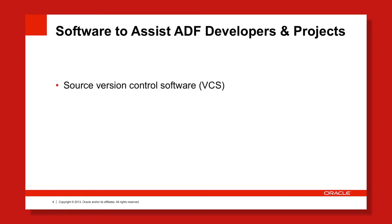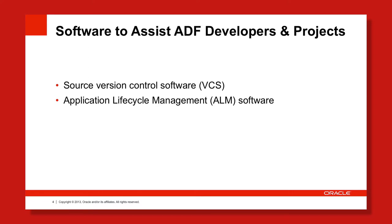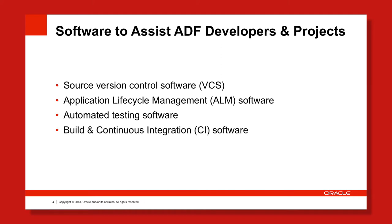The first category is version control software, used to check in and out and keep copies of various versions of your code. The second is Application Lifecycle Management (ALM) tools, which deal with issues, project management, and organizing a project. Third is automated testing software, designed to assist you in testing your ADF applications and replaying those tests automatically. Fourth is continuous integration software, which on a nightly or weekly basis checks out your code, builds it to check for compile errors, runs automated tests, and deploys applications to dev, testing, or production environments. Finally, we'll briefly mention some additional tools to consider.